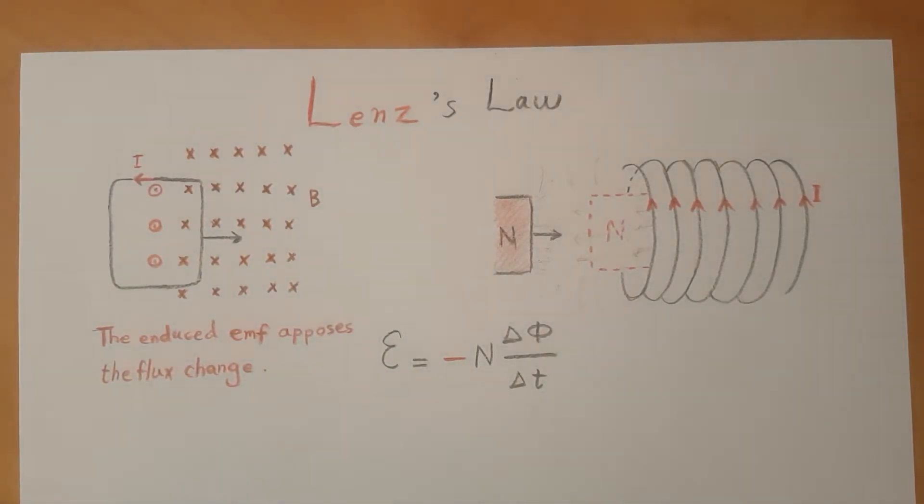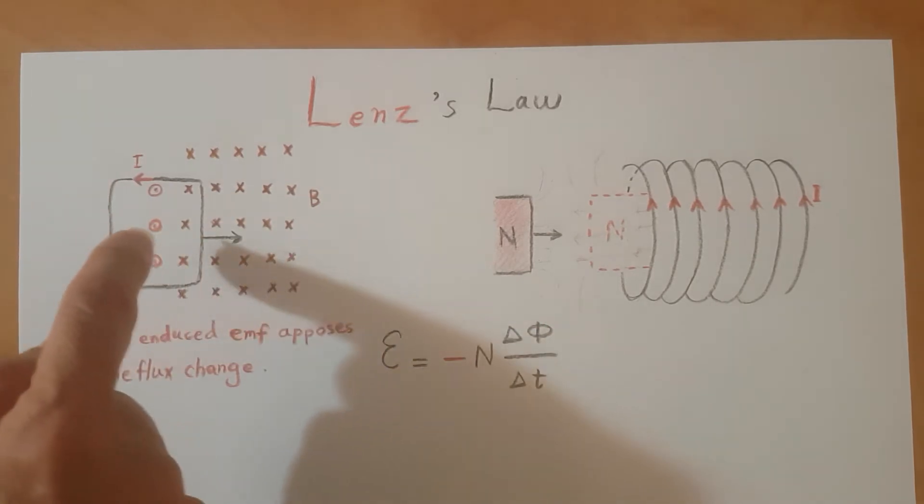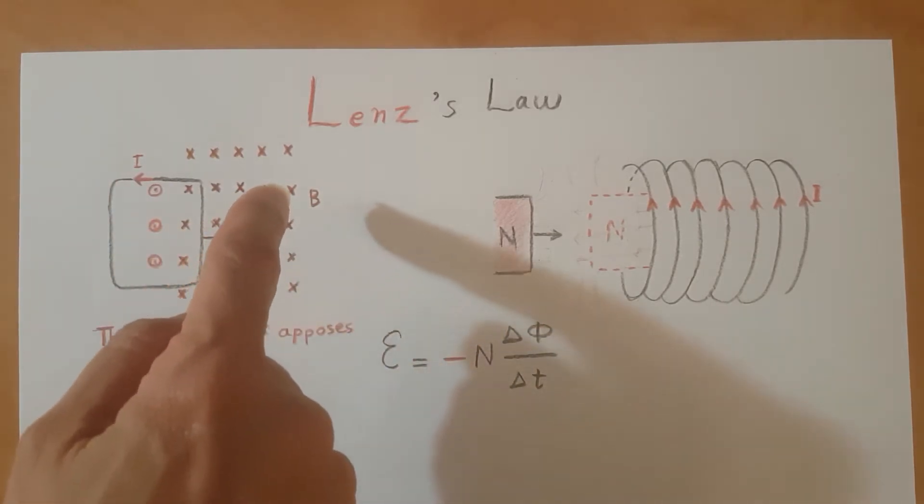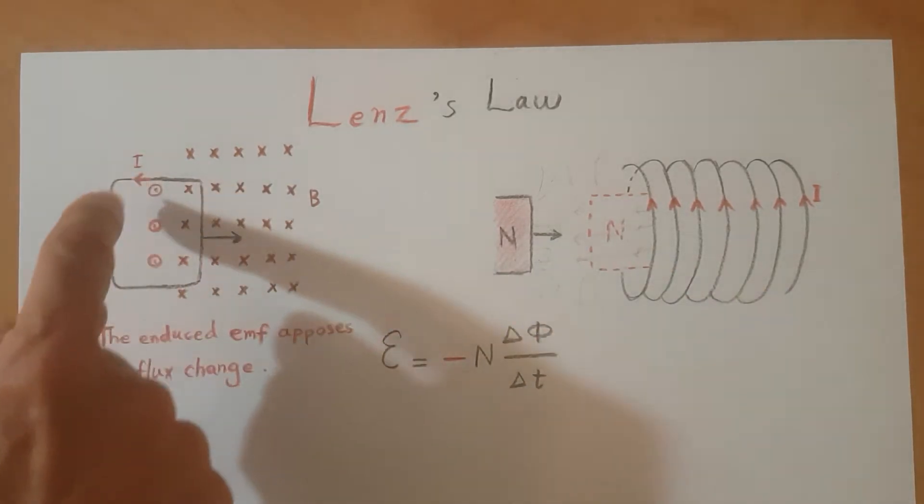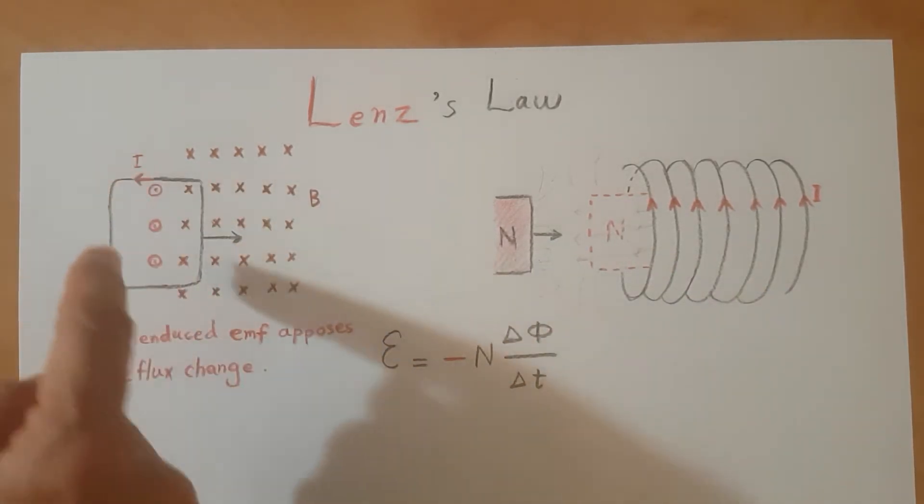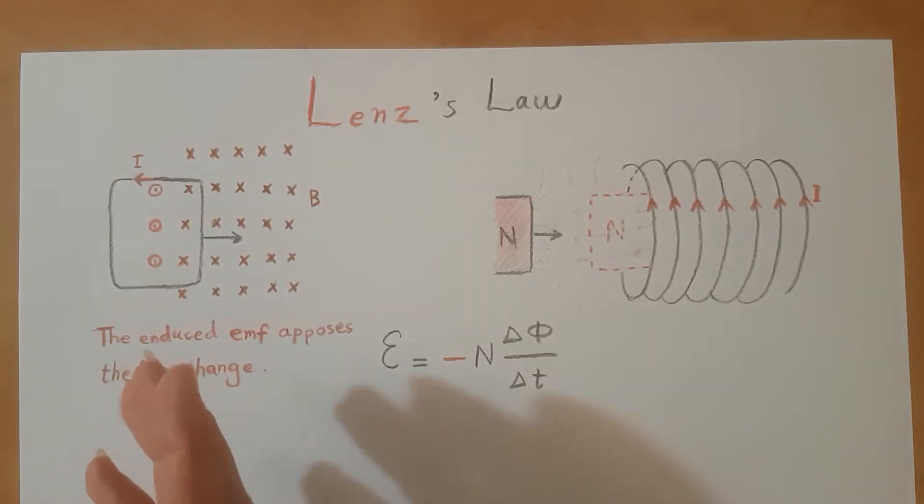For example, you can see this loop is entering this magnetic field of inside going B's. So the number of inside going B's inside this loop are increasing, so the loop will produce an I which will create outside going B's.